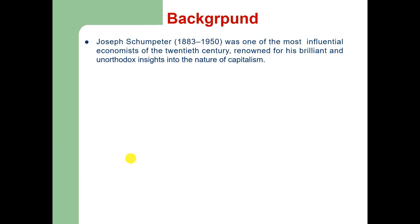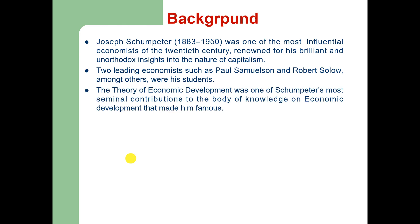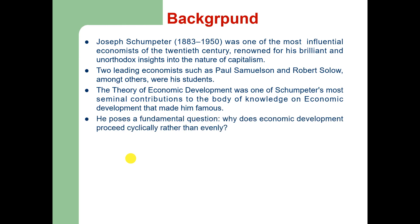Joseph Schumpeter was one of the most influential economists of the 20th century, renowned for his brilliant and unorthodox insight into the nature of capitalism. Two renowned economists — Paul Samuelson and Robert Solow, both Nobel laureates — were students of Schumpeter. His theory of economic development was one of his most seminal contributions, and he posed a fundamental question: why does economic development proceed cyclically rather than evenly?